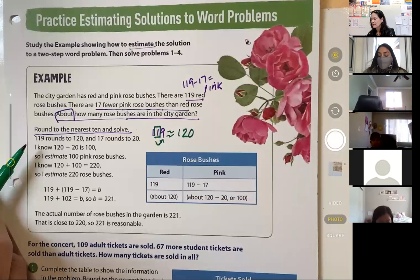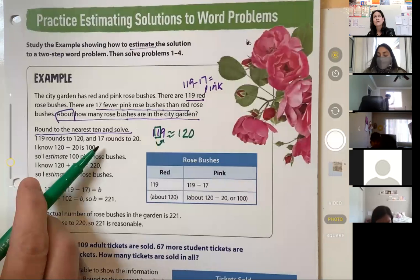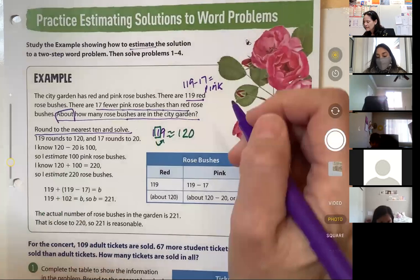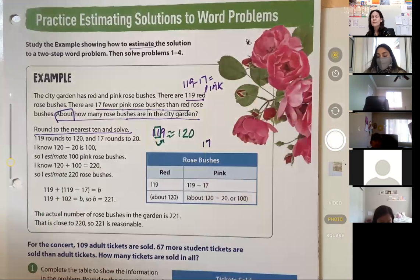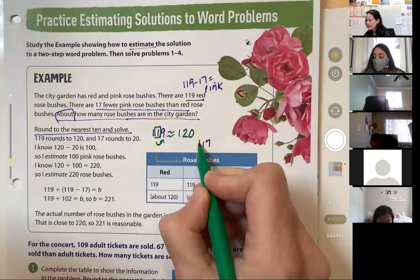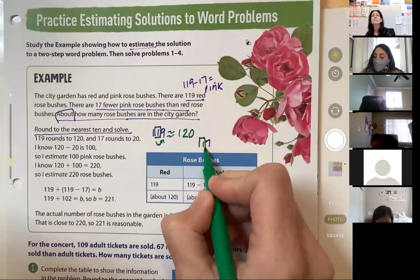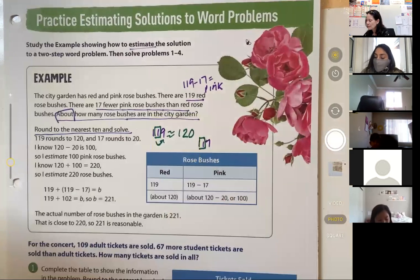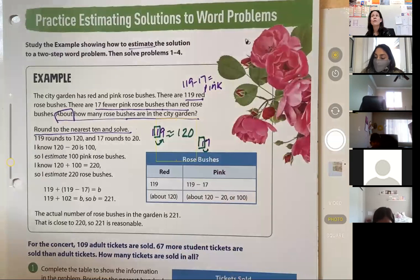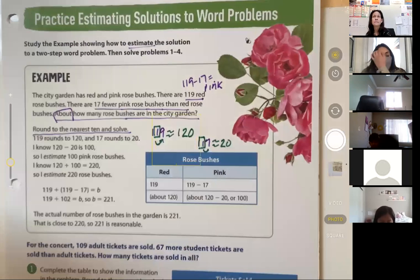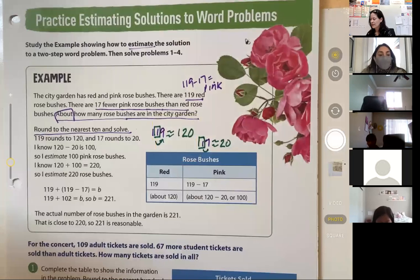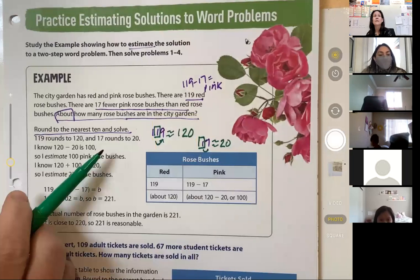17 rounds to 20. Why? If we take 17, we are rounding to the nearest 10. We go next door. Five or more, it goes up. And that is rounding to 20. And that's what it's telling you here. 17 rounds to 20.